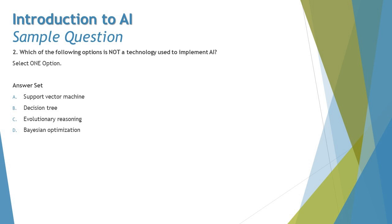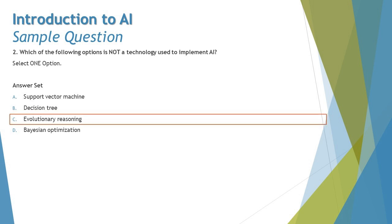We have four options: A) support vector machine, B) decision tree, C) evolutionary reasoning, and D) Bayesian optimization. Support vector machines and decision trees are both forms of machine learning. Bayesian optimization is also a machine learning form. However, there is no such AI technology as evolutionary reasoning — such a term is used in discussions related to biological evolution, not as a straightforward AI technology. So the right answer is C: evolutionary reasoning is not a technology used to implement AI.